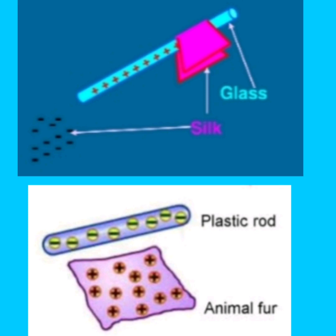In the first experiment, glass and wool: wool is above glass in the series, so wool becomes negative and glass becomes positive. In the second experiment, fur and plastic rod: the plastic rod is above fur in the series, so plastic becomes negative and fur becomes positive. The combination shows that unlike charges (plus and minus) attract, while like charges (plus-plus or minus-minus) repel.